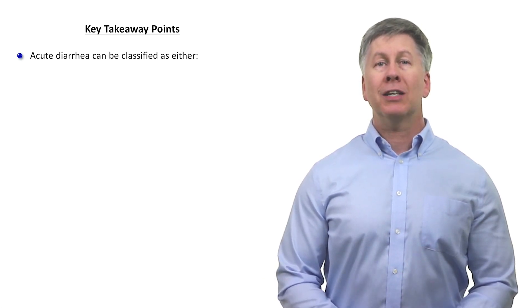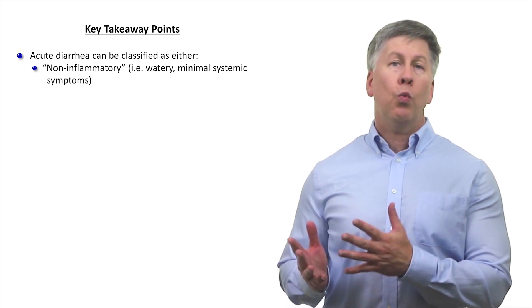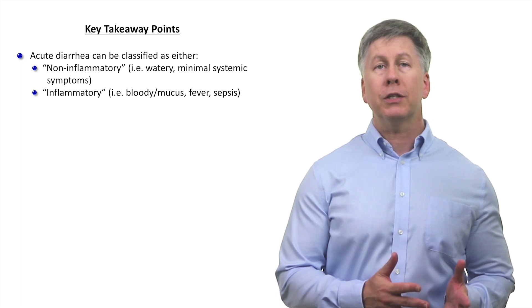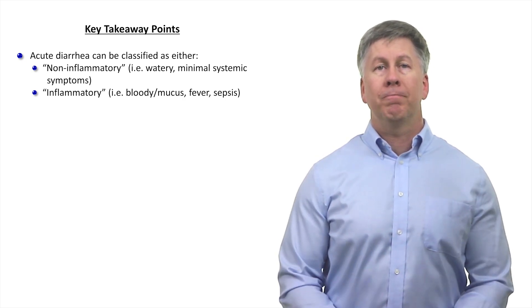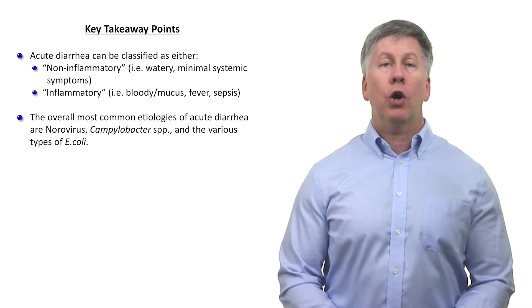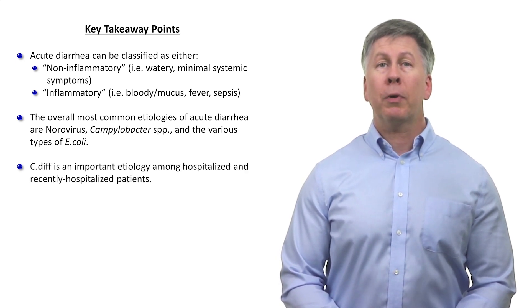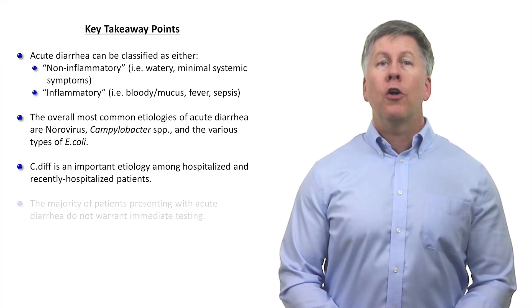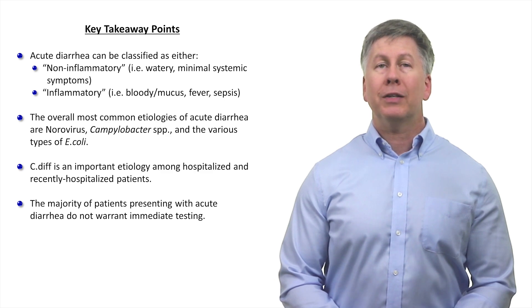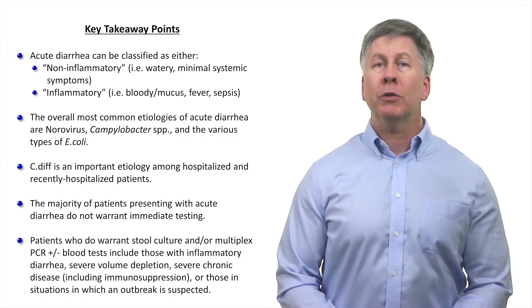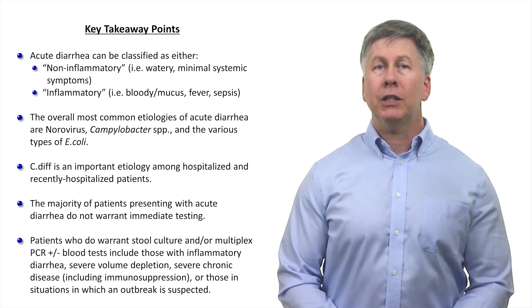The key takeaway points for this video: Acute diarrhea can be classified as either non-inflammatory — characterized by watery bowel movements and minimal systemic symptoms — or inflammatory, characterized by bowel movements with either blood or mucus, and often fever or other signs of sepsis. The overall most common etiologies of acute diarrhea are norovirus, Campylobacter, and the various types of E. coli. C. diff is an important etiology among hospitalized and recently hospitalized patients. The majority of patients presenting with acute diarrhea do not warrant immediate testing. Patients who do warrant stool culture and/or multiplex PCR plus or minus blood tests include those with inflammatory diarrhea, severe volume depletion, severe chronic disease including immunosuppression, or those in situations in which an outbreak is suspected.